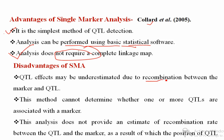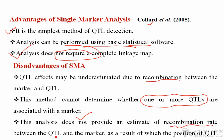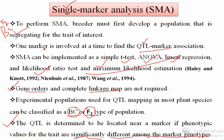Disadvantages of SMA: the QTL effect may be underestimated due to recombination between the marker and QTL — if any recombination occurs, SMA may fail and give spurious results. This method cannot determine whether one or more QTLs are associated with a marker, since we are using only one marker at a time. Additionally, this analysis does not provide an estimation of the recombination rate between the QTL and the marker, so the position of the QTL in the genome remains unknown.